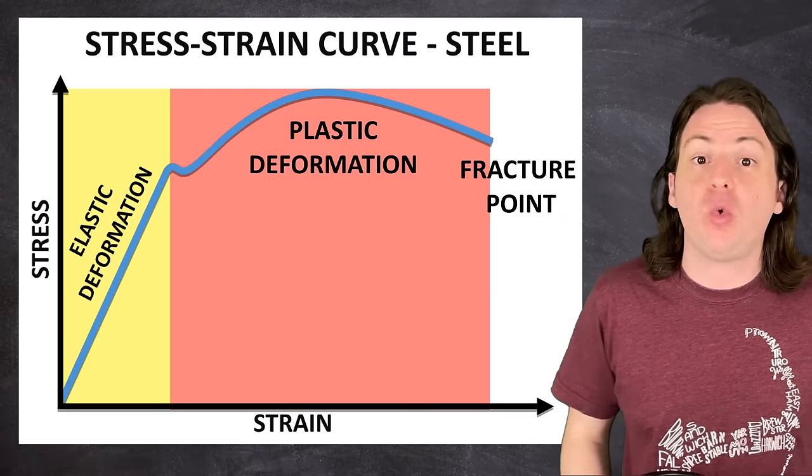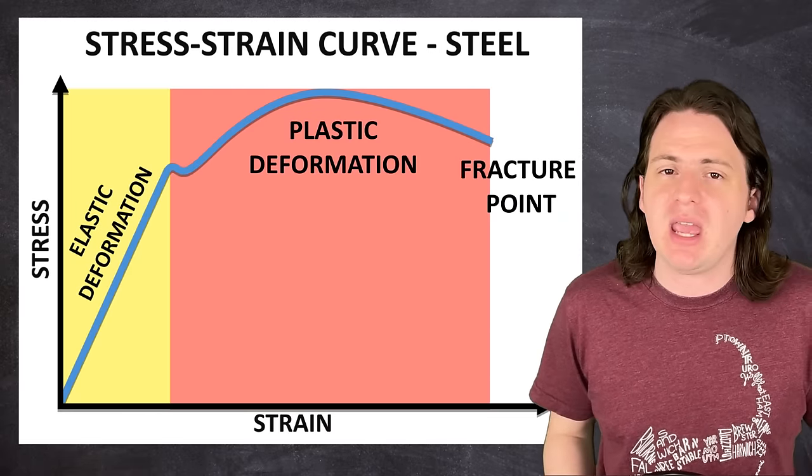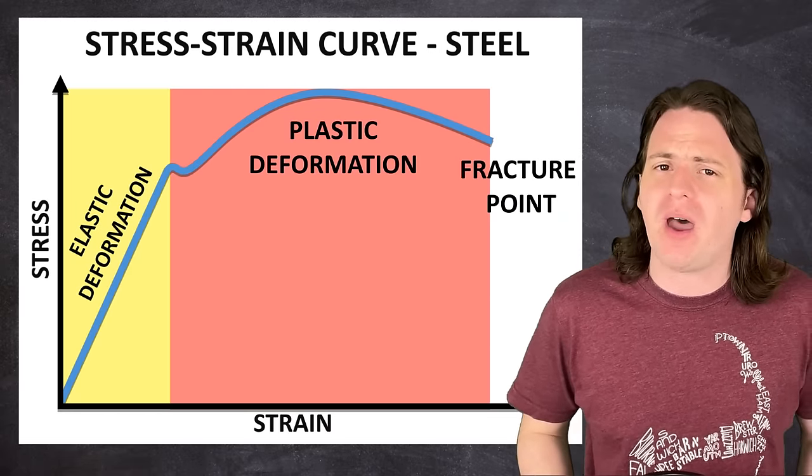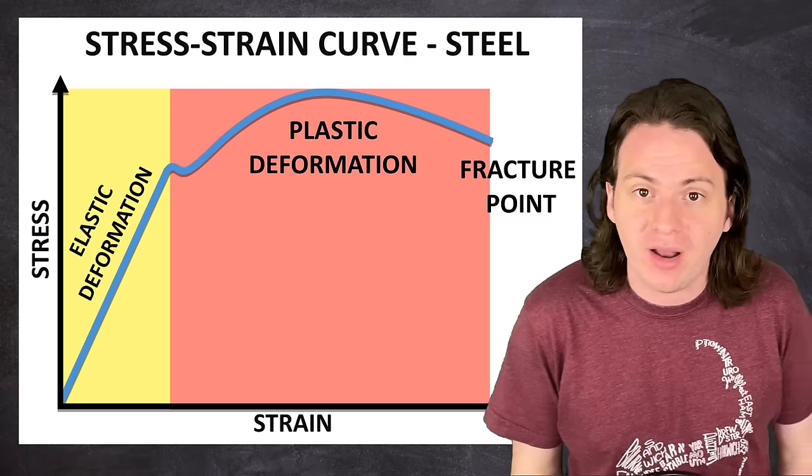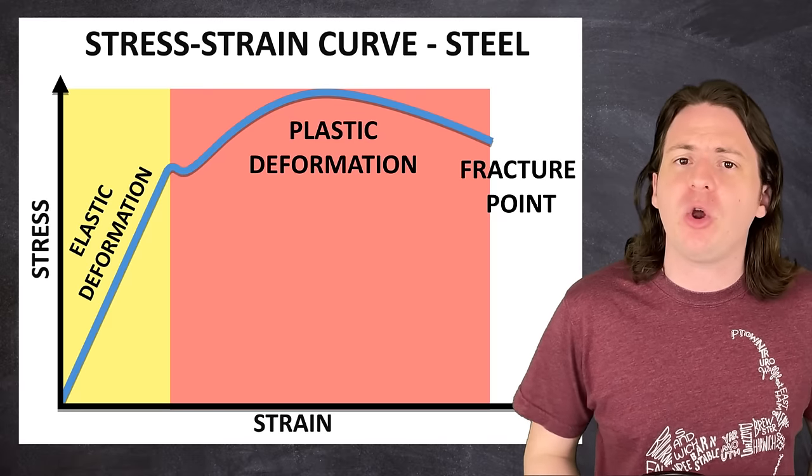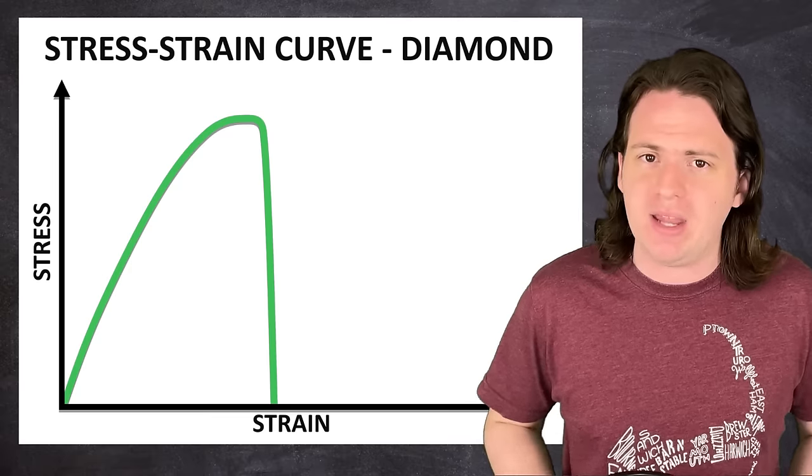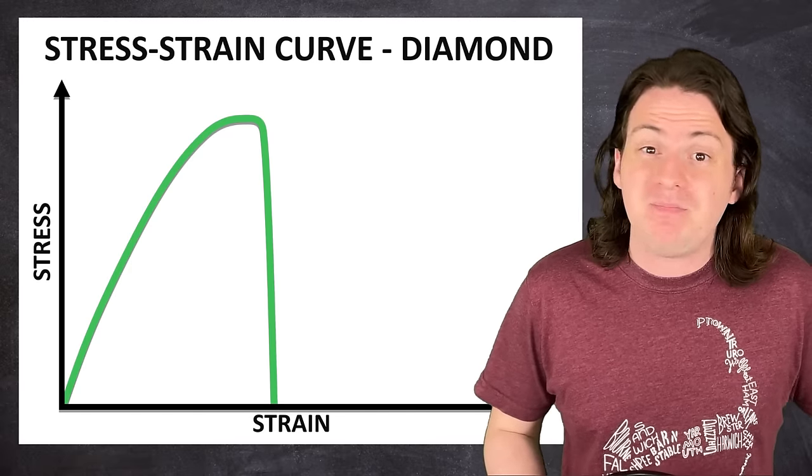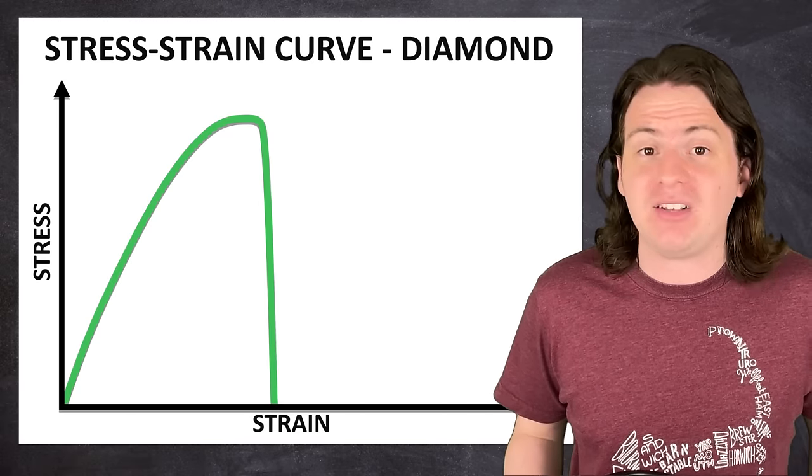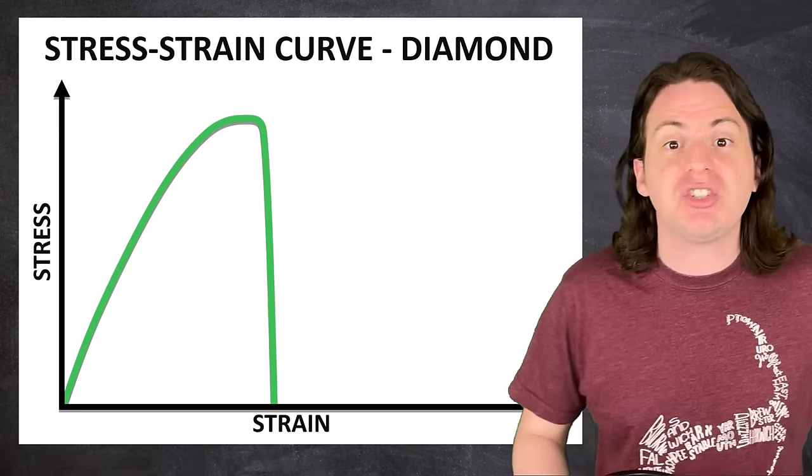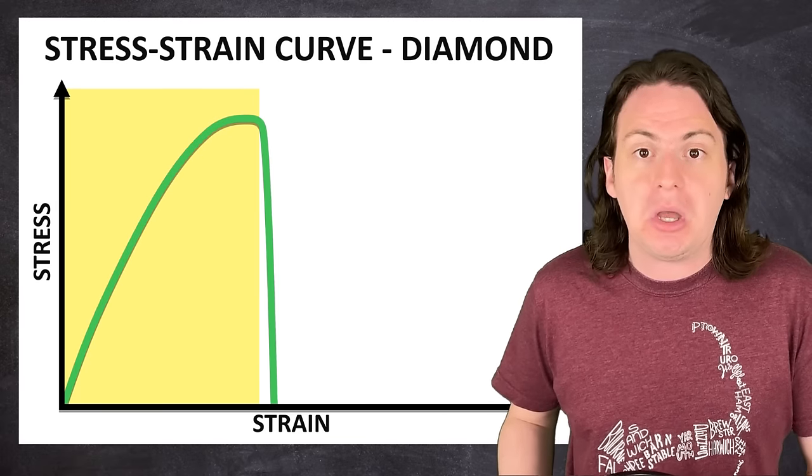This diagram is for steel specifically, but most materials will follow this same basic pattern. If we pull up a stress-strain curve for diamond, though, we see that it's quite different. Namely, it doesn't really have a plastic deformation zone. It just elastically deforms, and then it breaks.